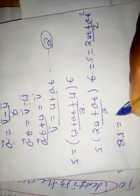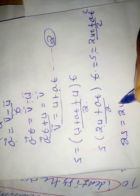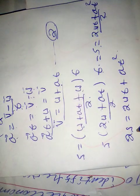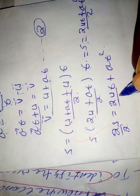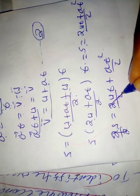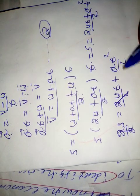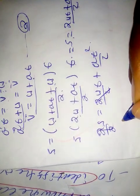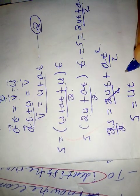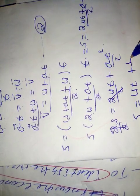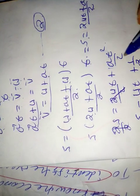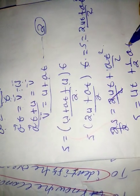2S is equal to 2Ut plus AT squared. This is the formula. This formula is S equals Ut plus one half AT squared.